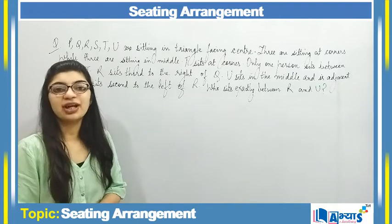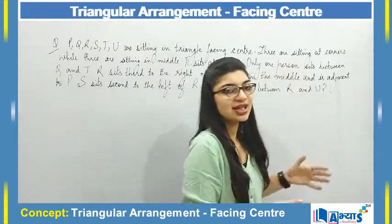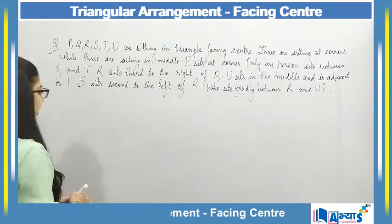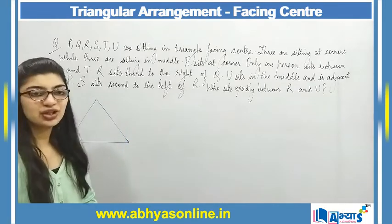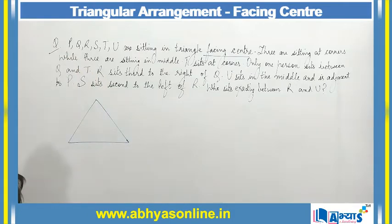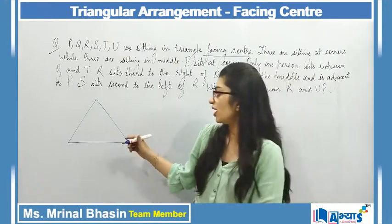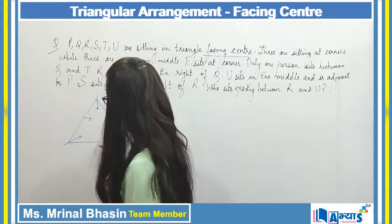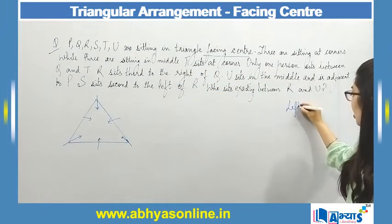This is our question regarding the triangular arrangement. In this triangular arrangement, all persons face the center. The question states: P, Q, R, S, T and U are sitting in a triangle facing center. We need to form a triangle and arrange the persons. Three of them are sitting at the corners while three are sitting in the middle of the sides. So there are three corner positions and three middle positions.